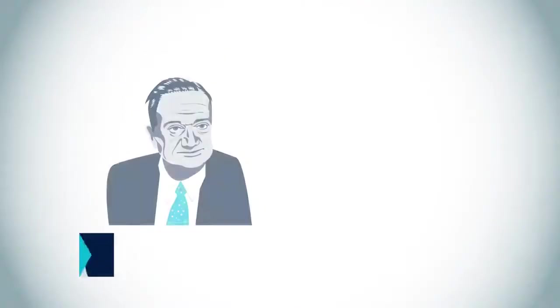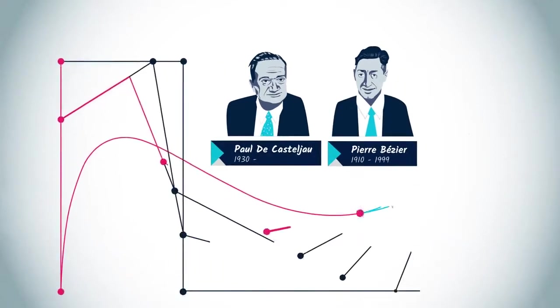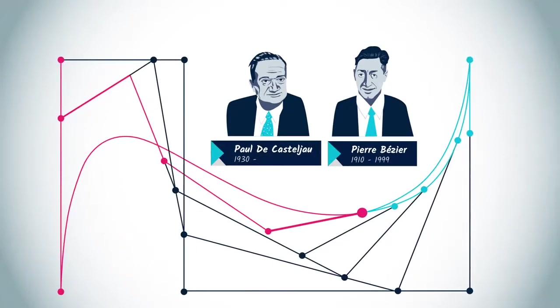Around 1960, two French engineers working for different car makers, Paul de Casteljau and Pierre Bézier, defined what is now known as Bézier curves, a tool for designers to draw harmonious automobile bodies.